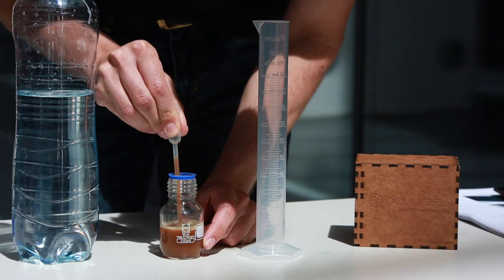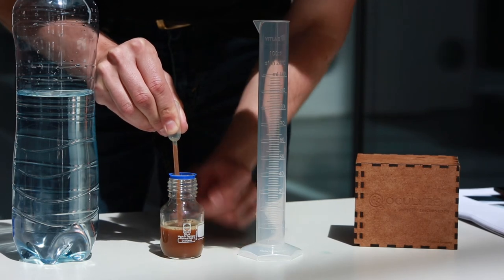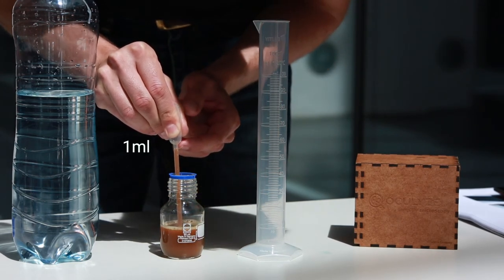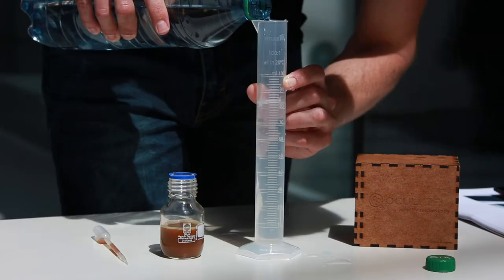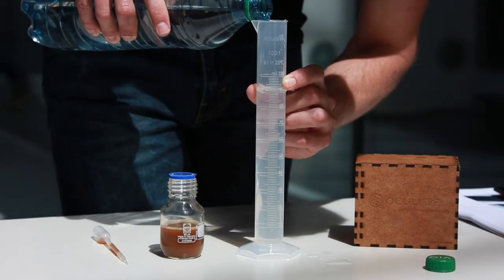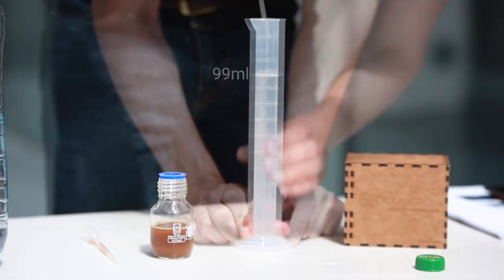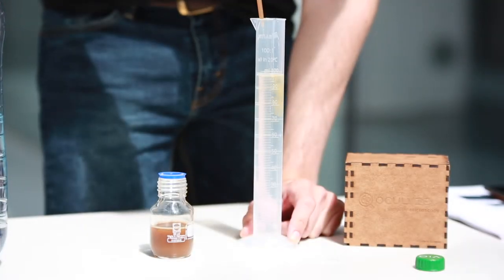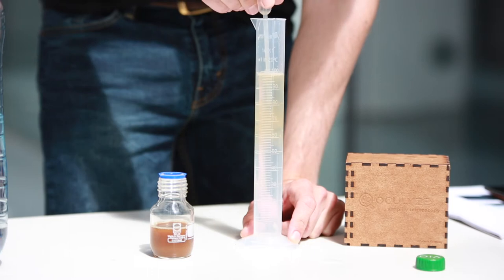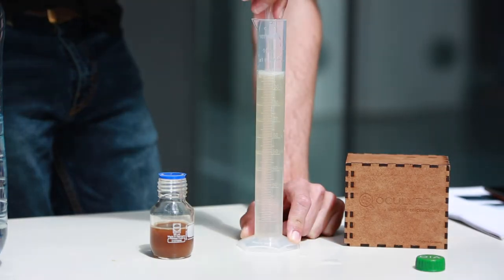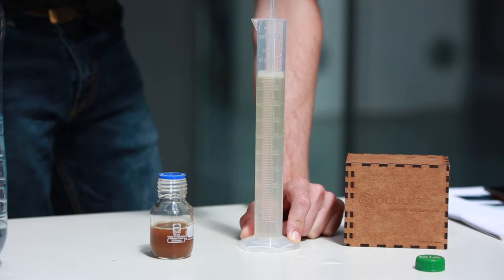Fill your Pasteur pipette with 1 ml of yeast. Step 2. Fill your measuring cylinder with 99 ml of water. Step 3. Empty the Pasteur pipette into the measuring cylinder. Step 4.